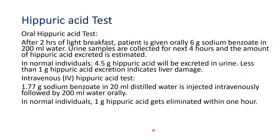The intravenous test is given when the patient may be suffering from an intestinal absorption defect. If the patient has any intestinal absorption defect, this test can be done intravenously. After 1 hour, the urine sample should be collected and the hippuric acid quantity should be estimated.